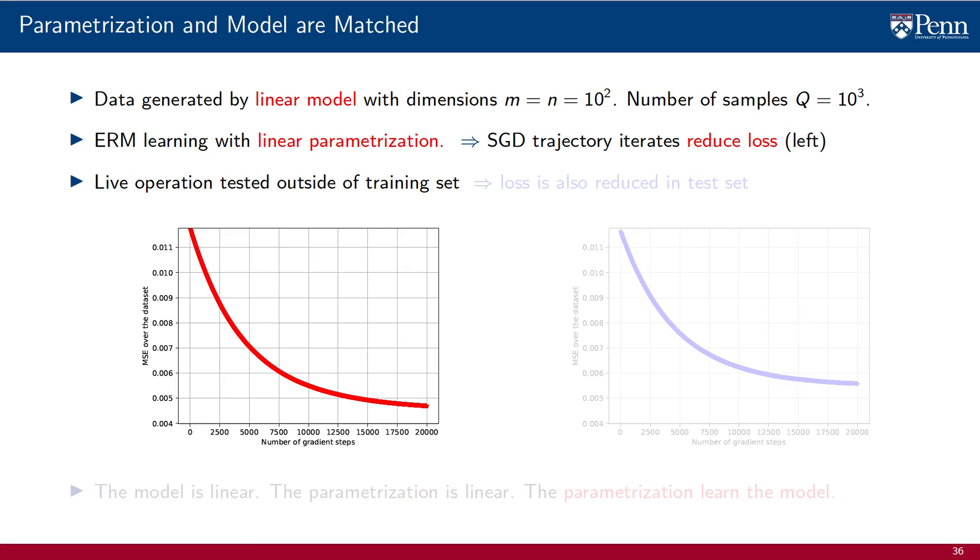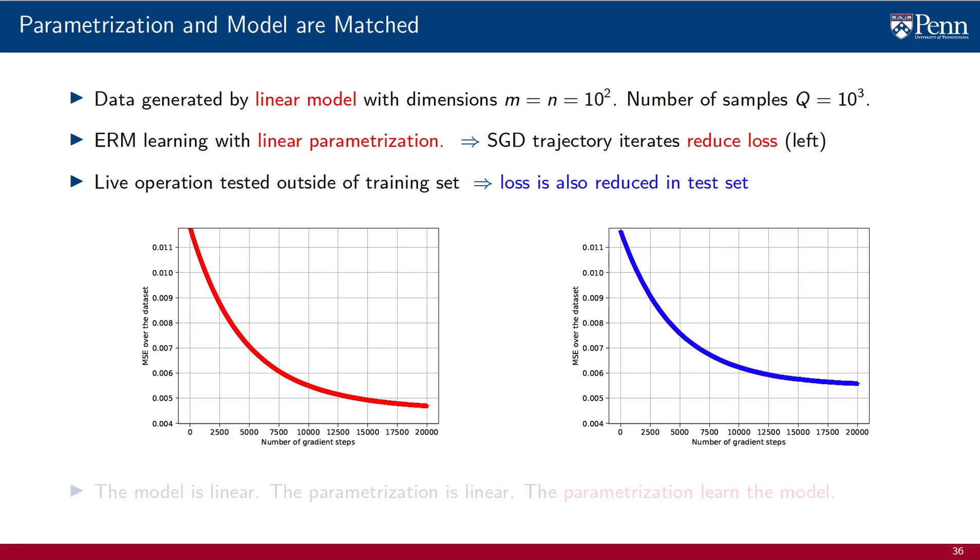But we must recall that during the operation of the AI, we work outside of the training set. The plot on the right shows testing of the SGD trajectory on a different set. We see that the loss is also reduced, and it also converges to a small value. Thus, we not only succeed in solving the ERM problem and reducing the loss to a small value, we also succeed at learning to operate outside of the training set. Now, there is no mystery here. The model is linear. The parametrization is linear. Thus, the parametrization learns the model.